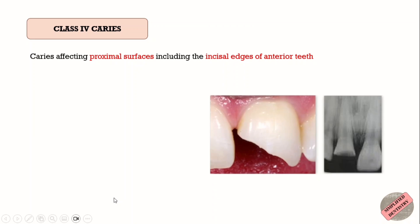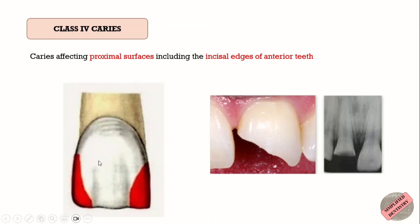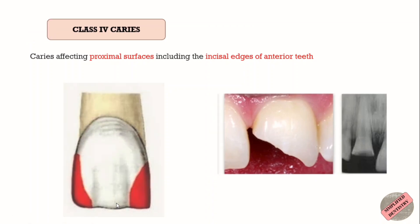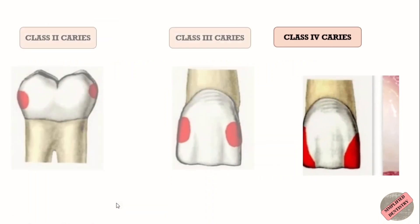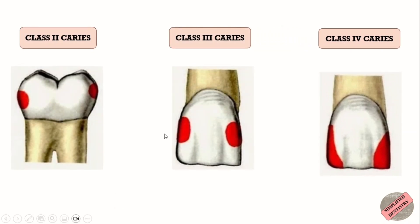Class 4 caries is the caries affecting the proximal surface of anterior teeth involving the incisal angle, that is the incisal edges of the anterior teeth. Now let's compare Class 2, Class 3, and Class 4 caries.